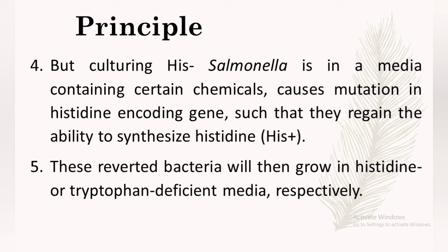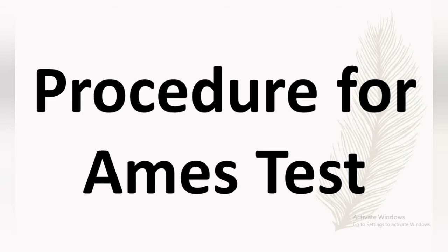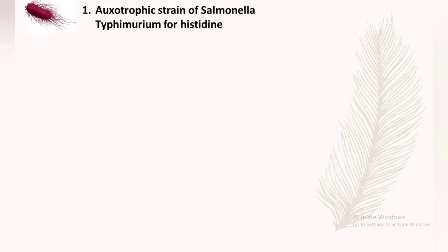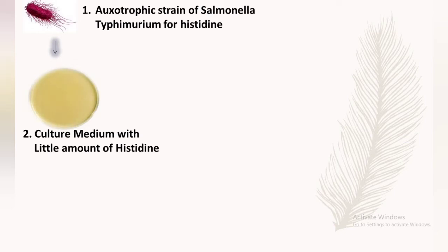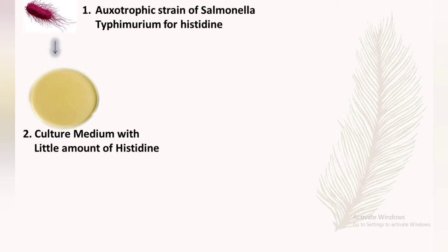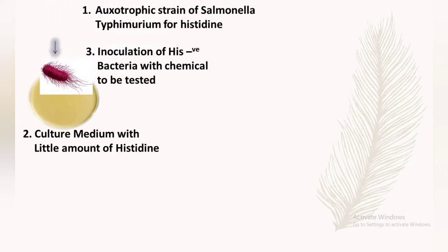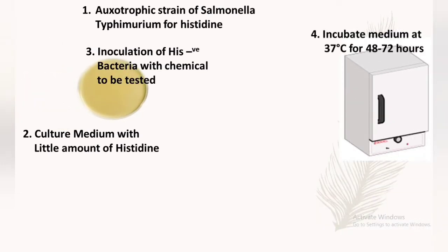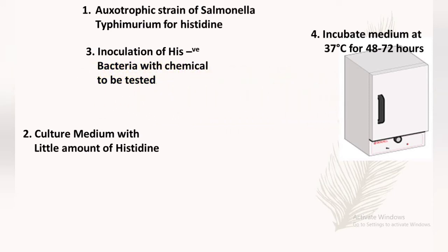Now we are going to learn about the procedure for the Ames Test. I have tried to explain it in animation form — you can see this. The first step is to prepare an auxotrophic strain of Salmonella typhimurium for histidine. Auxotrophic strain means the strain which is incapable of producing a specific amino acid. Then a culture medium is prepared by adding a small amount of histidine for the initial growth of bacteria. After that, the histidine-negative bacteria is inoculated in the culture medium with the chemical to be tested.